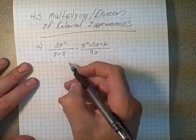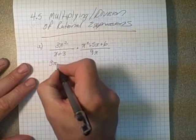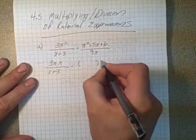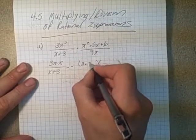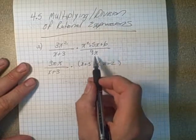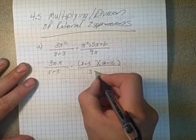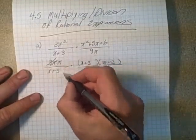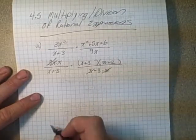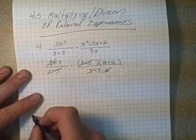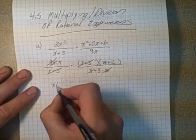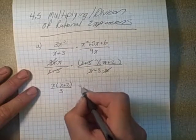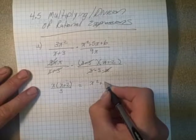Starting with the first example, we factor: there are two x's, giving 3 times 2x over x plus 3, multiplied by — using trinomial skills — x plus 3 times x plus 2 (two numbers that multiply to 6 and add to 5), and 3 times 3 times x. Now that everything is factored, we cancel a 3 and an x from numerator and denominator, and cancel the (x plus 3) as well, leaving x times (x plus 2) over 3.